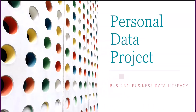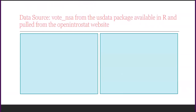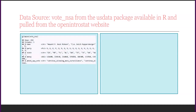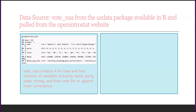My name is [name], and I'll be presenting my personal data project for Business Data Literacy. For this research, I used the VoteNSA dataset from the US data package available in R Studio, pulled from the open interest website. The first step was to take a look at the rows and columns within the dataset. VoteNSA contains 434 rows and five columns of variables, including name, party, state, money, and their vote for or against mass surveillance.